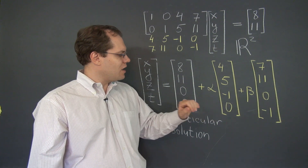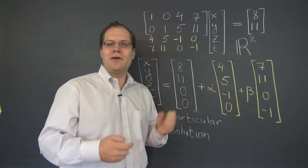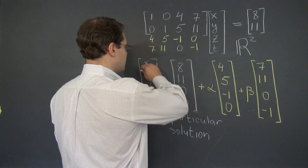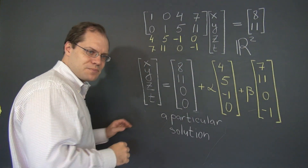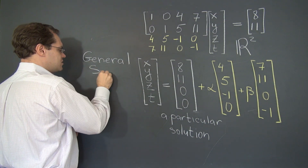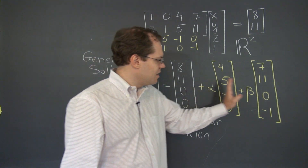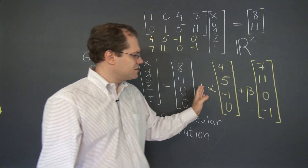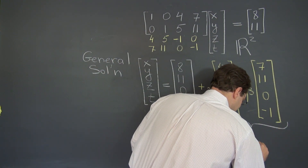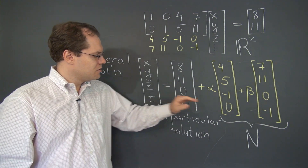I will now make quite a few observations about this solution. It has a very important name — the expression that captures all possible solutions to the system is called the general solution. And as you can see, the general solution consists of a particular solution plus the elements of the null space. In fact, it's an expression that captures the entire null space, which we denote by the letter N. So the general solution always equals a particular solution plus the null space.